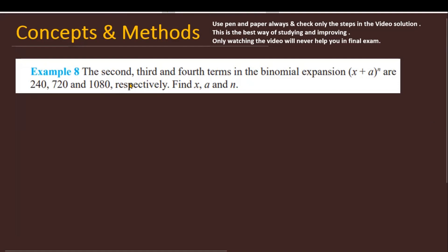The question is: the second, third, and fourth terms in the binomial expansion (x + a) raised to the power n are 240, 720, and 1080 respectively. Find x, a, and n.